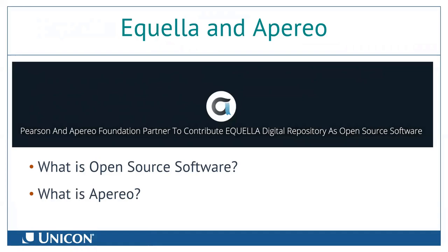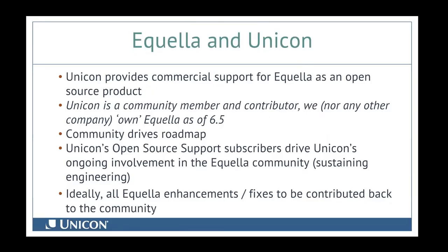UNICON is an entity able to provide commercial support for Aquela while it remains an open source product. UNICON is a community member and contributor to the Aquela open source world — however, neither UNICON nor any other company owns Aquela at 6.5. Pearson owns the 6.4 series, but after open sourcing, the closest ownership is the Aperio Foundation, which guides it. The community drives the roadmap for new features and the direction of the product, as well as prioritization of bug fixes.